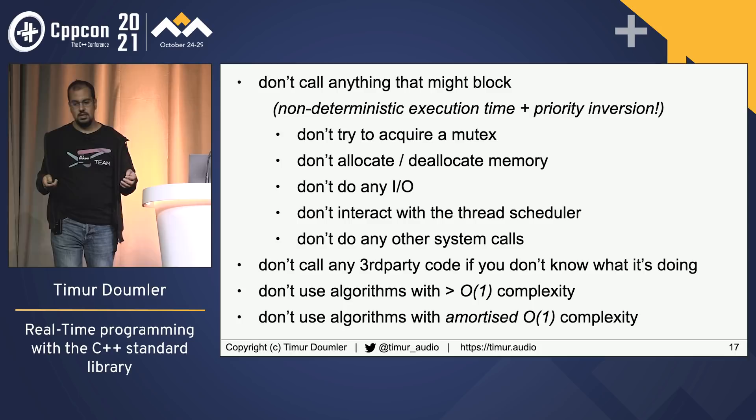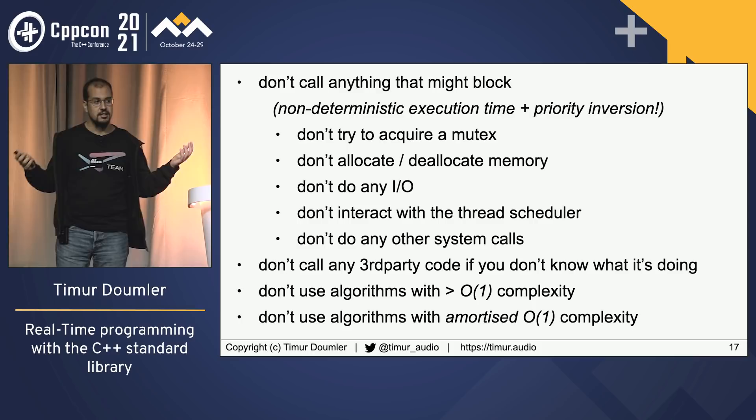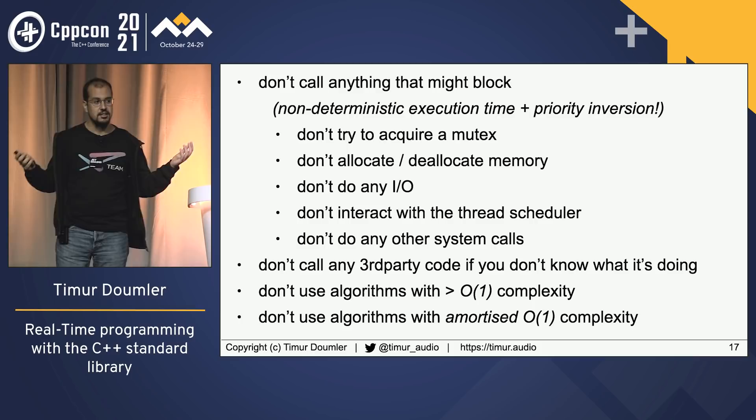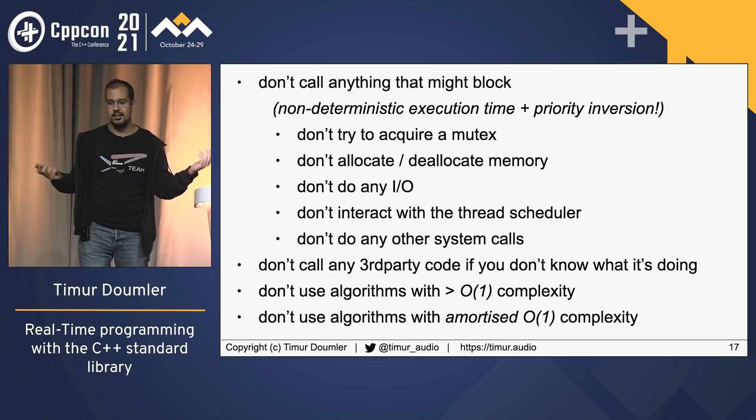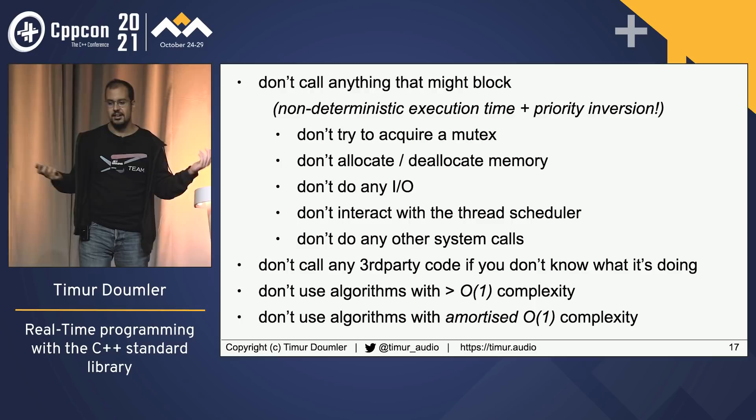You also can't call algorithms with worse-than-constant complexity — in particular, you can't use algorithms with amortized constant complexity. The typical example is a hash map: insertion is usually constant time, but every once in a while the hash map has a collision and needs to rehash all its contents, taking 100x longer, and you get your glitch and miss your deadline.